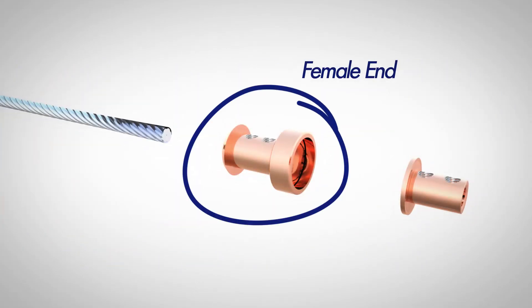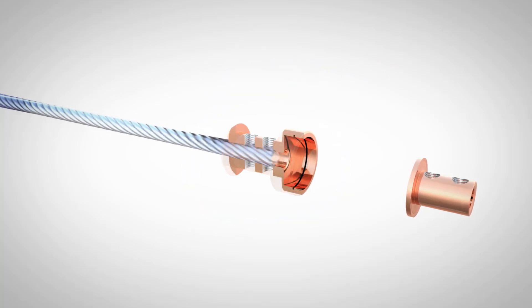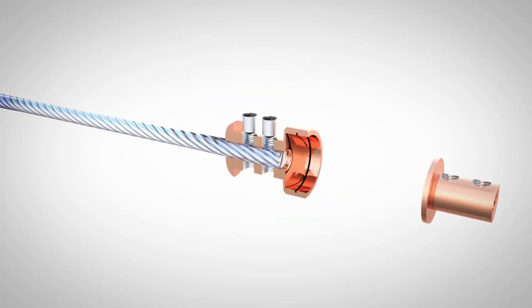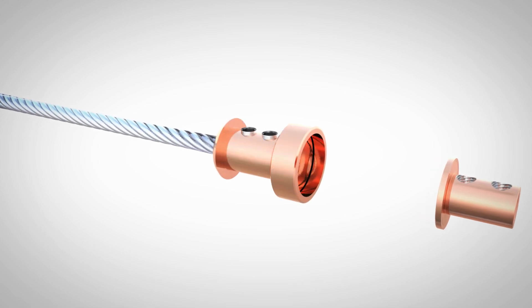Using the female end of the connector, add the connector end to line up with the cable end. Torque the two set screws to the appropriate level based on our torque chart.